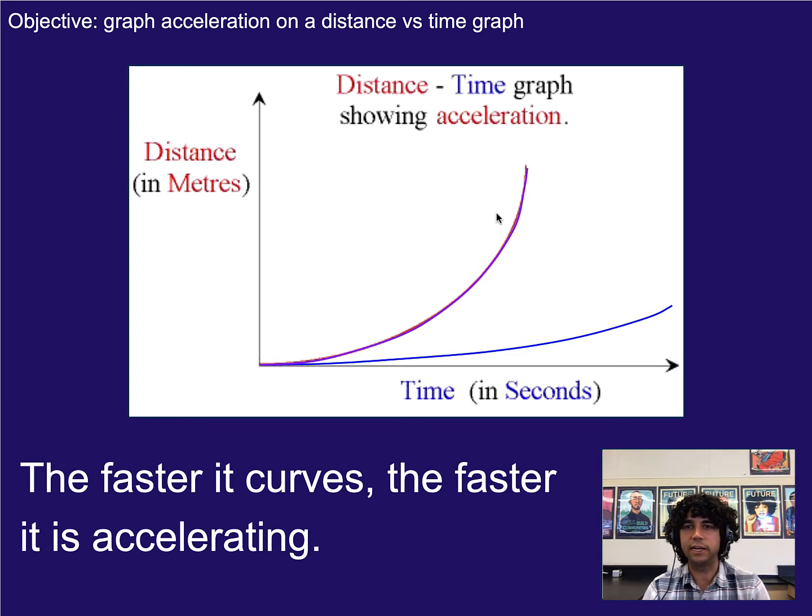Now if a line curves very steep or very quickly, then we know that something has a larger acceleration. Something that curves more gently is accelerating not as quickly or a smaller acceleration. Here we can literally see the slope starts flat and gets a little bit inclined. Here it starts flat but gets very steep, so it's accelerating quicker.